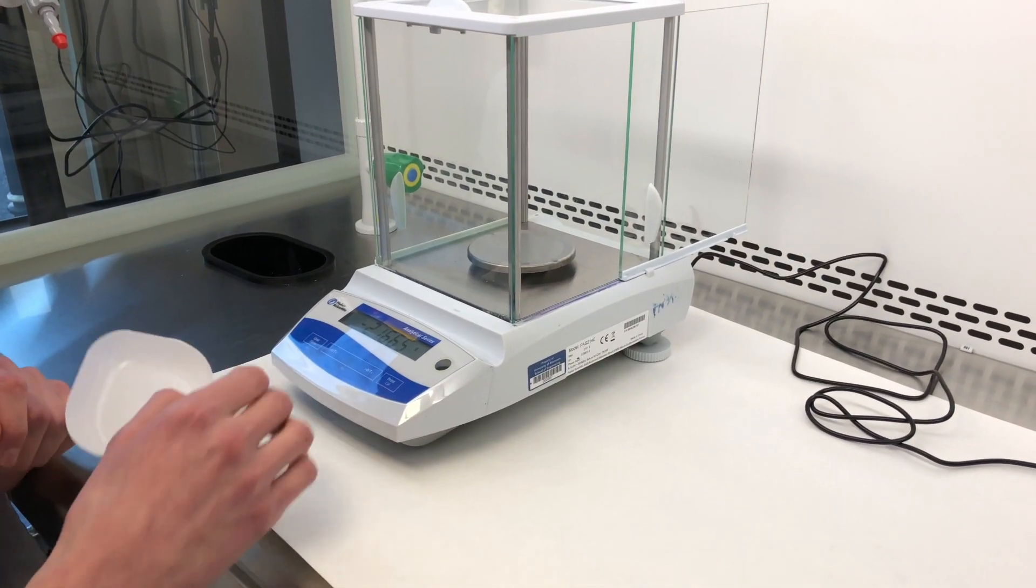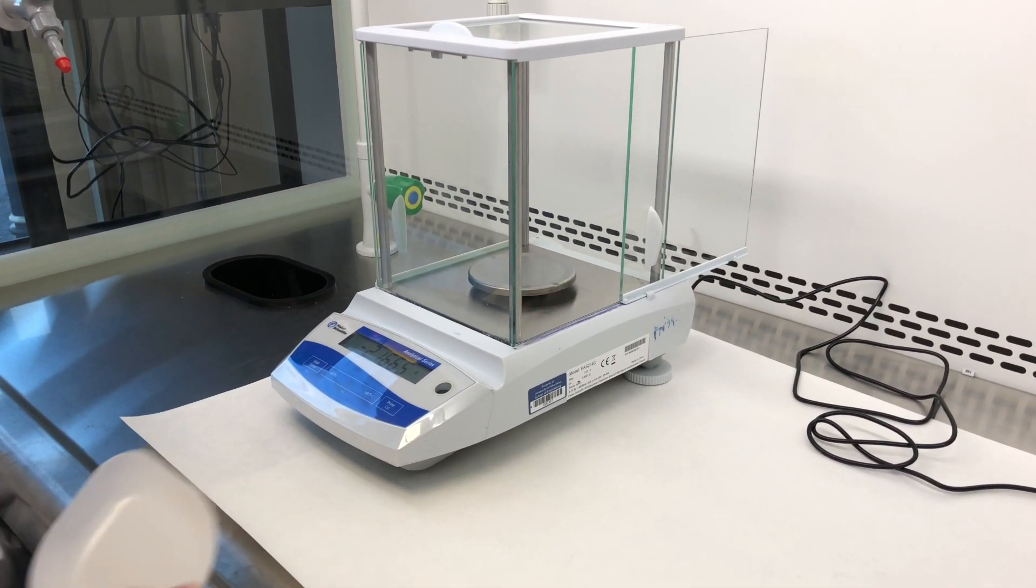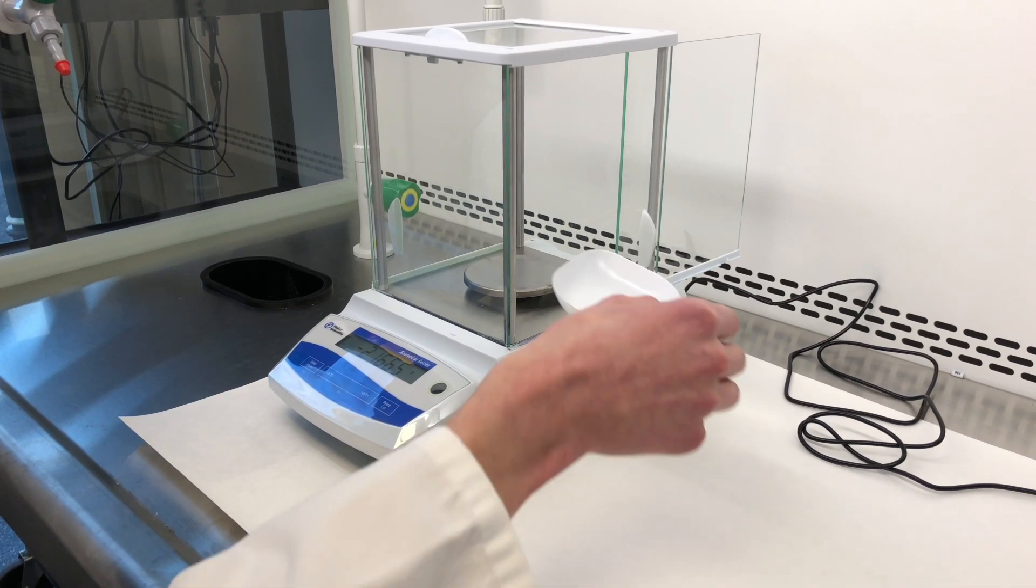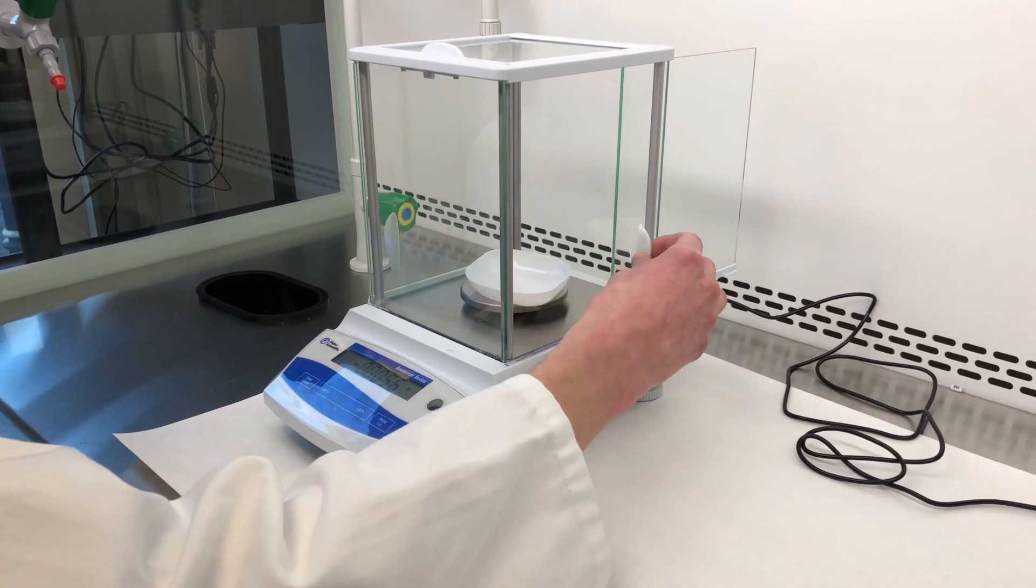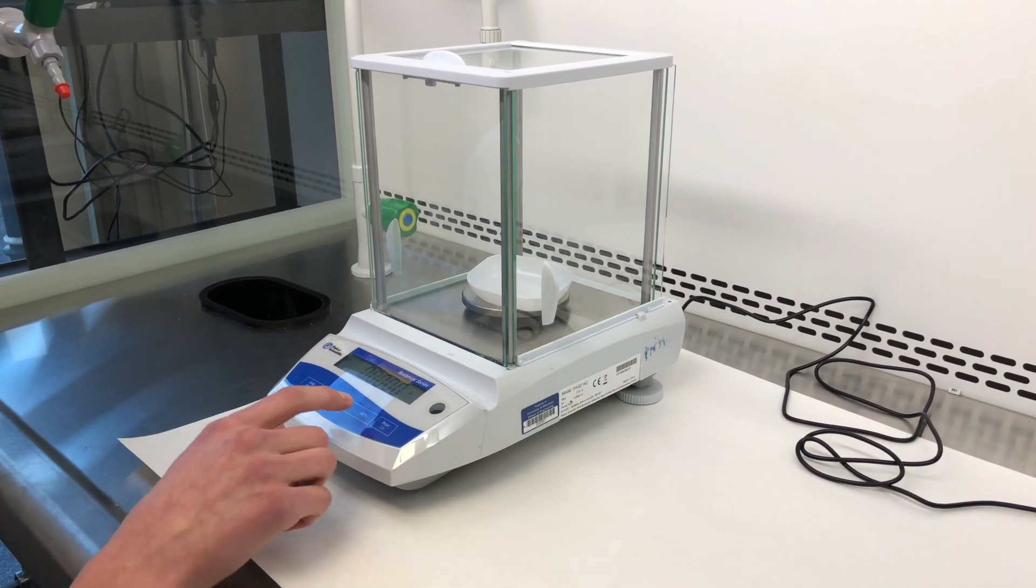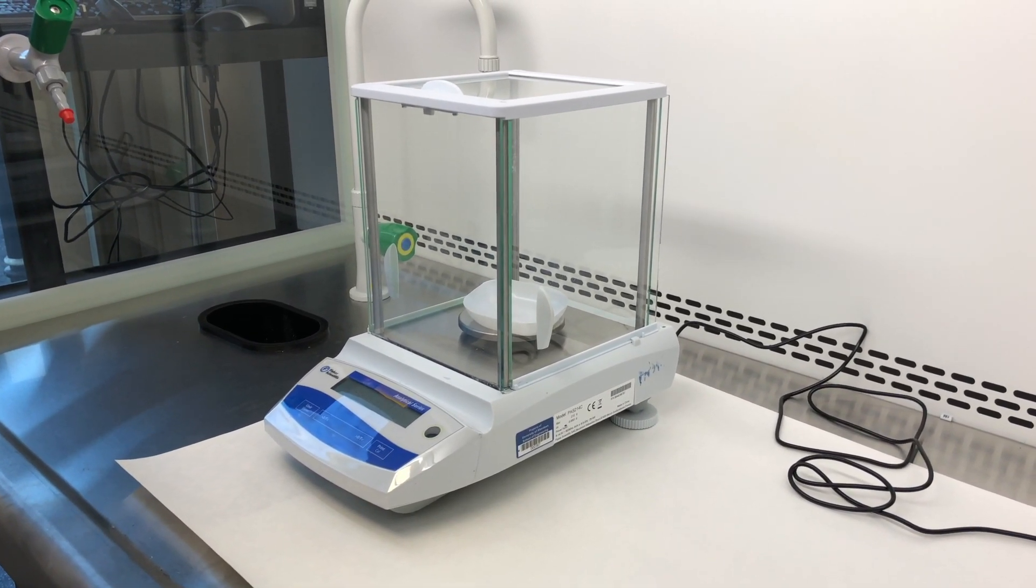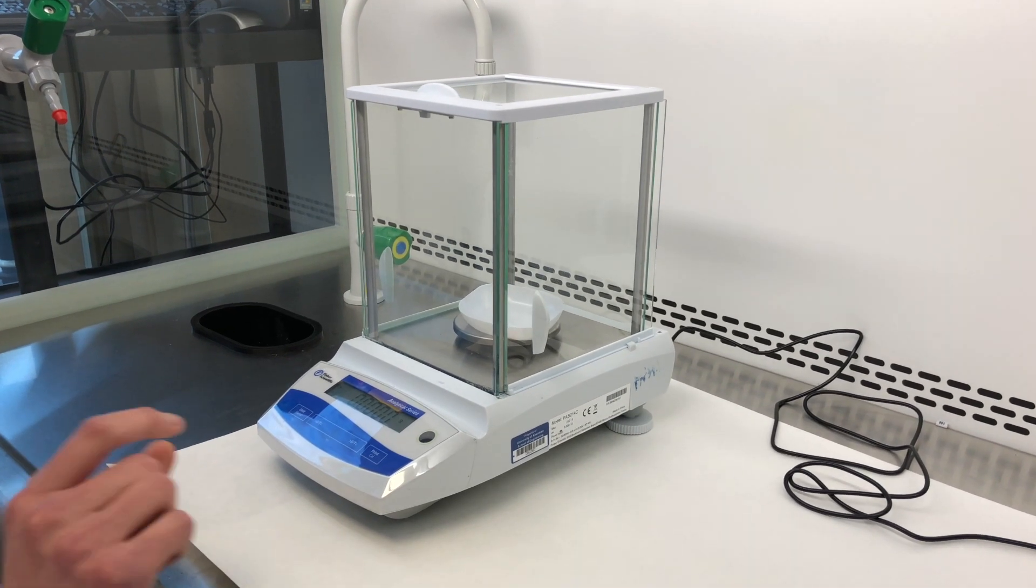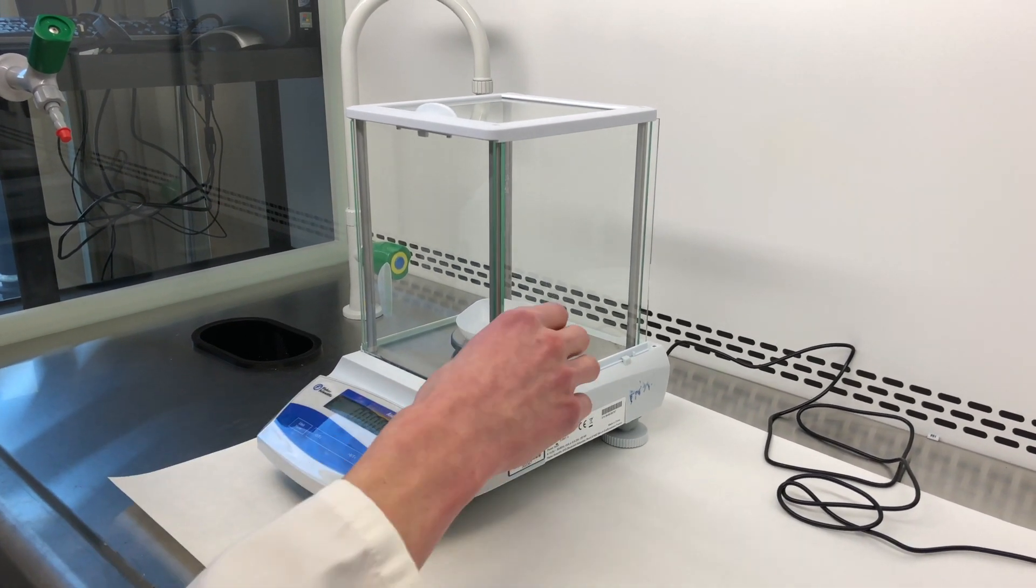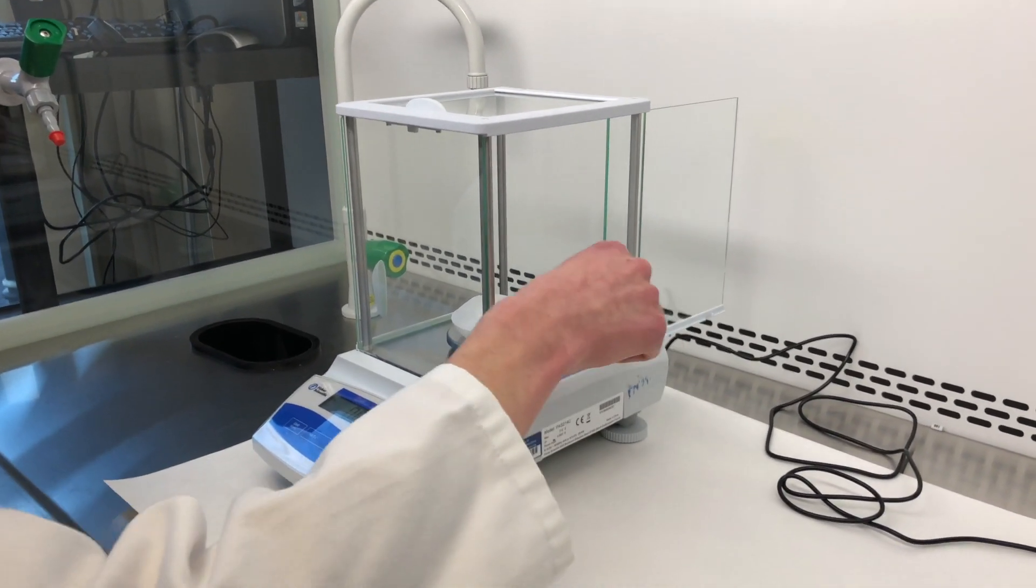So what we're doing here, we have a four decimal place weighing scale. We take an empty boat and place it on the scale, close the door, and then we zero it so that when we add the sodium hydroxide to the weighing boat, the difference doesn't include the boat itself.